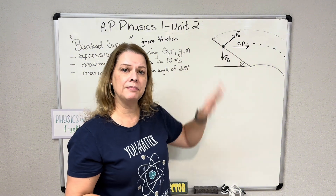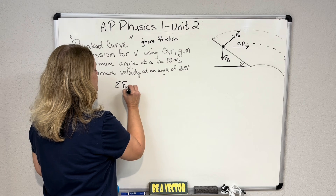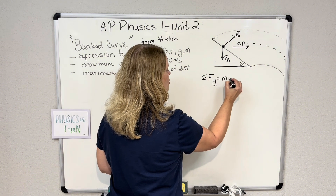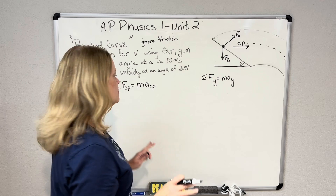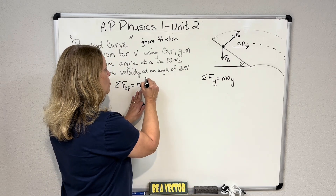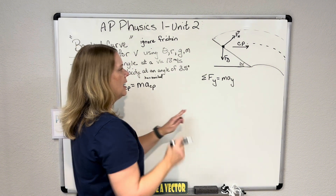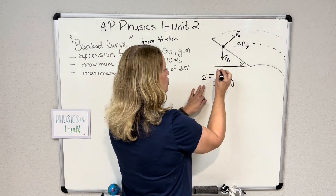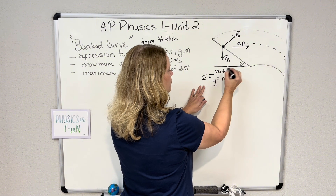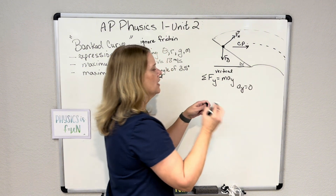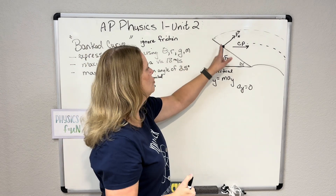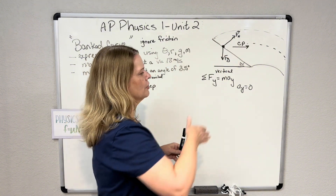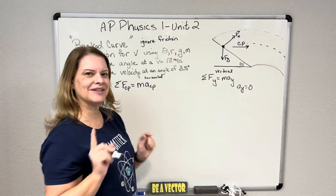We're going to be summing forces in this banked curve that are centripetal forces. We're also going to sum forces in the Y direction — straight up and down. You cannot think of this as a ramp. The centripetal motion is going to be the horizontal, the X direction, whereas the force due to gravity and the Y component of the normal force are going to be in the vertical direction. There's not going to be any acceleration in Y — the car is not going to be moving up in the air, nor is it going to be sinking straight through the road. Centripetal motion is towards the center as this car goes around the corner.